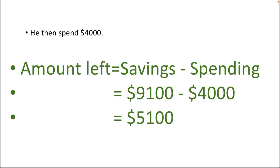The second statement is: he then spent four thousand dollars. We were having 9,100 dollars in savings. What he did next is he spent four thousand dollars from the savings. So the amount left is calculated as savings minus spending: 9,100 dollars minus 4,000 dollars, and the answer we get is 5,100 dollars. This is the remaining amount.